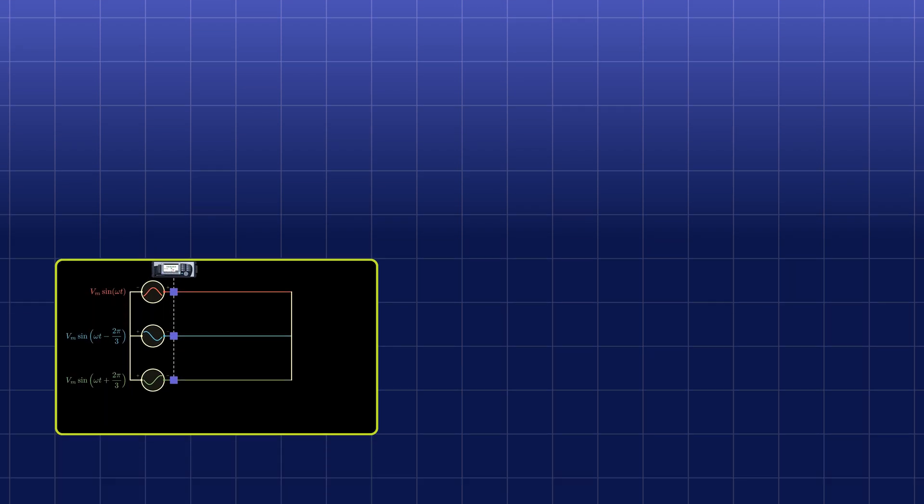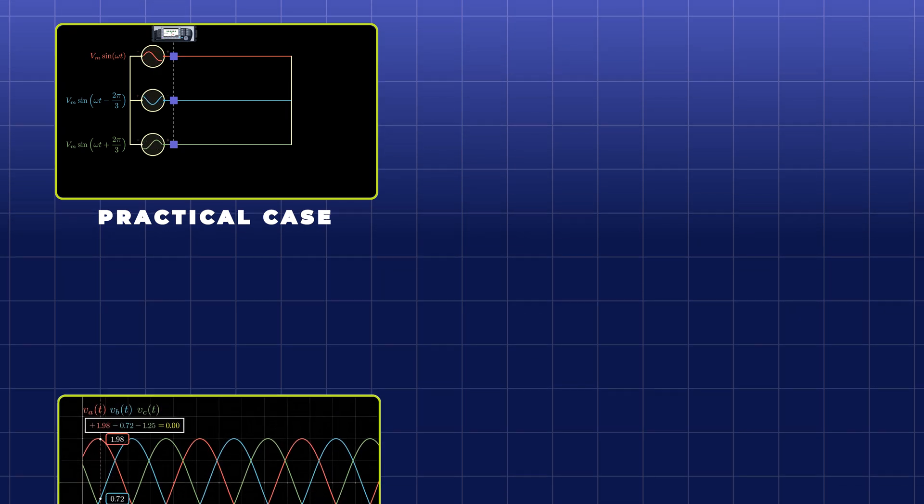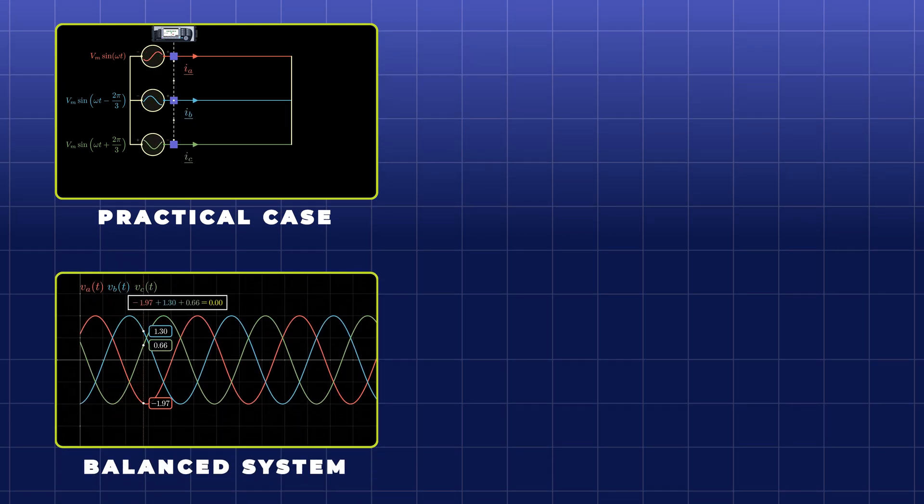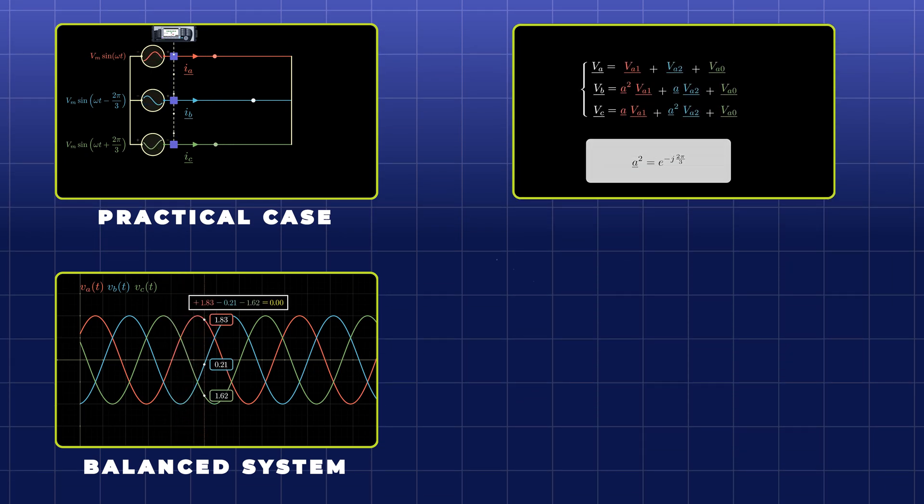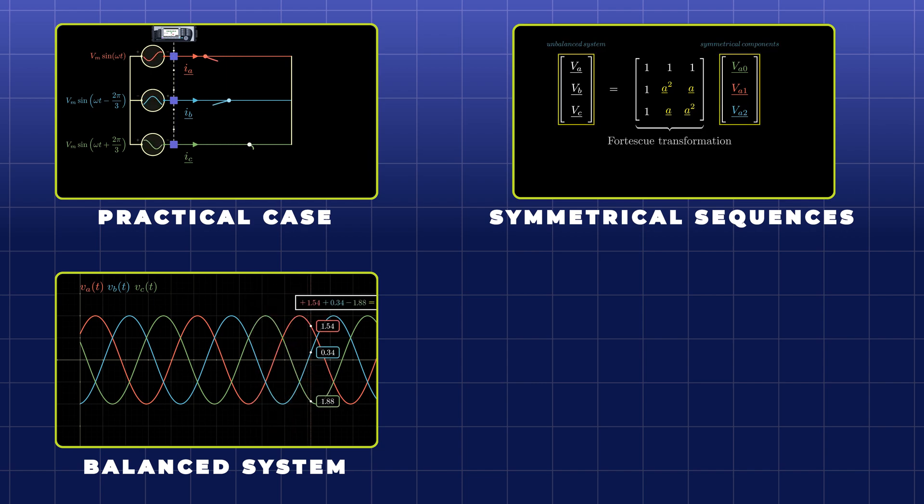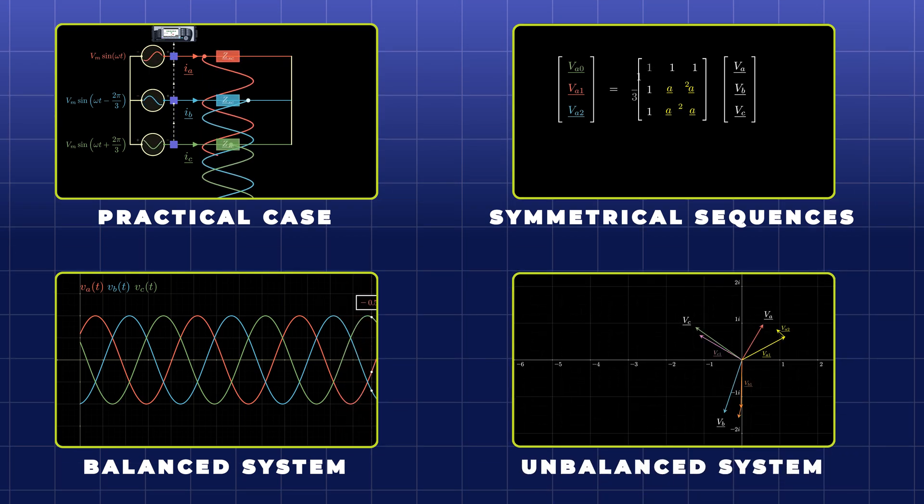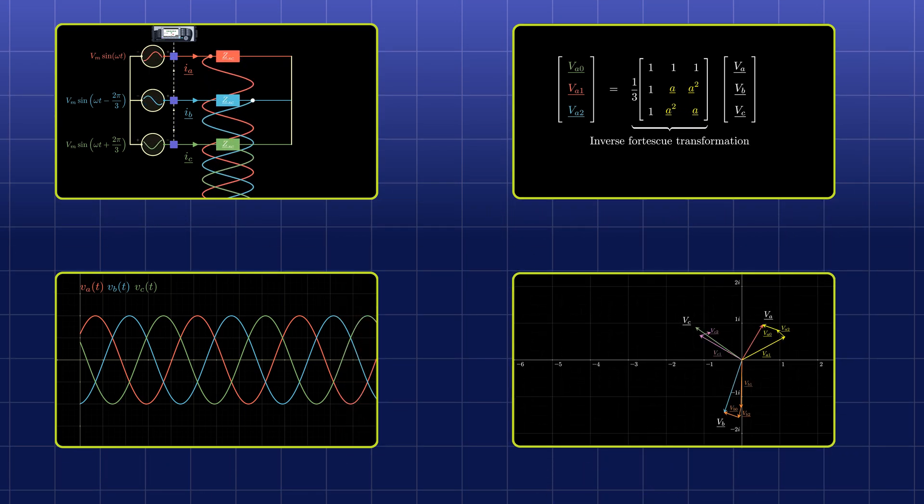Here's the game plan: first we will start by introducing the need for symmetrical components through a practical situation, then we'll define what a balanced system is. After that, we will introduce the symmetrical components and demonstrate their mathematical link with an unbalanced system.